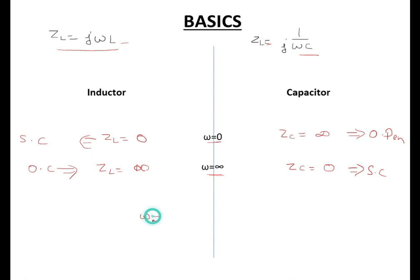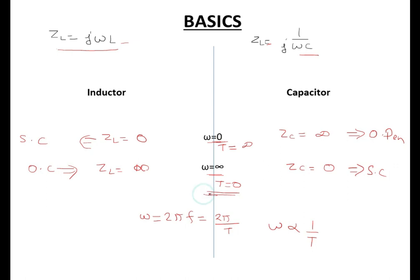ω = 2πF, where F is frequency and F = 1/T, so ω is directly proportional to 1/T. ω = 0 means T = infinite, and ω = infinite means T = 0. T = 0 means initially the inductor is open circuited and the capacitor is short circuited. T = infinite means at steady state the capacitor becomes open and the inductor becomes short circuited. You have to remember this, as it will help you in solving many questions.